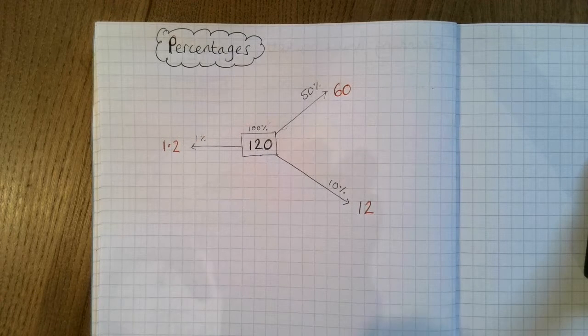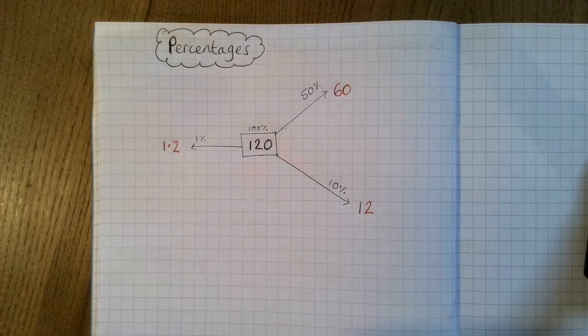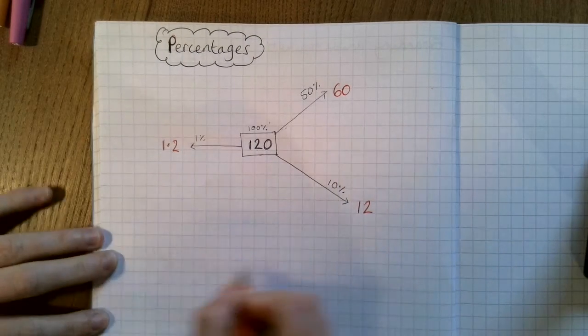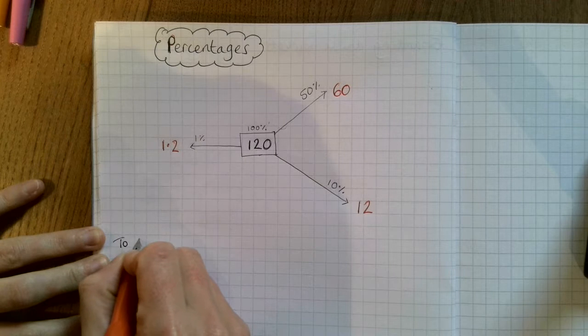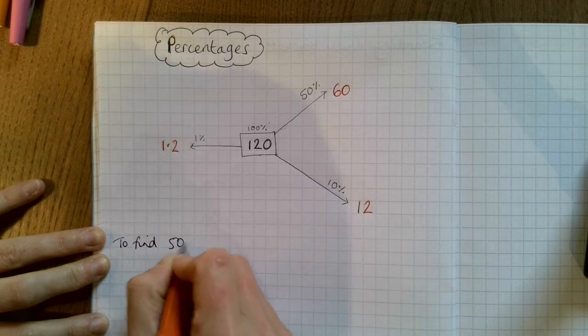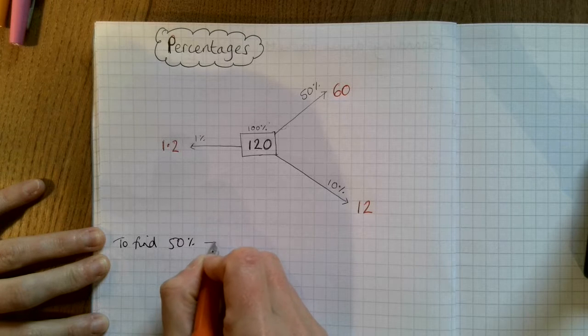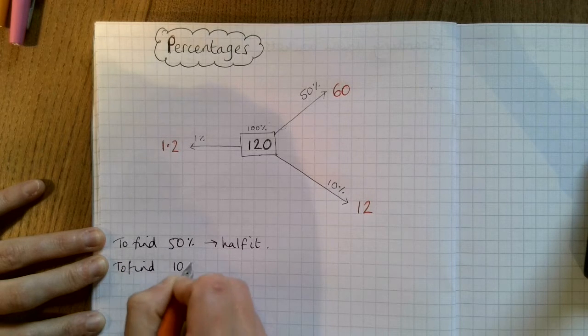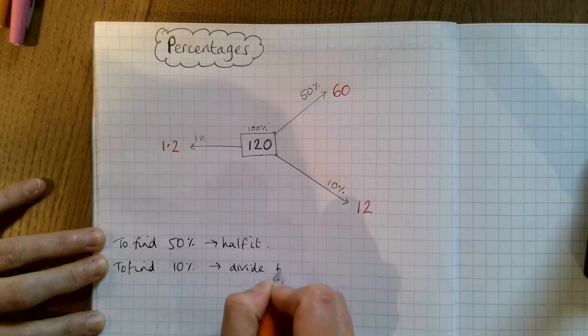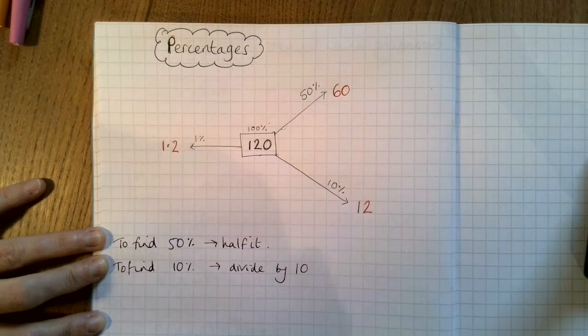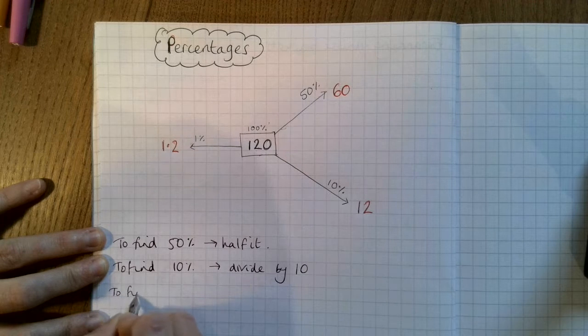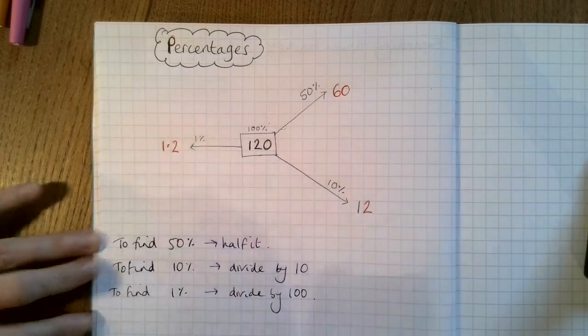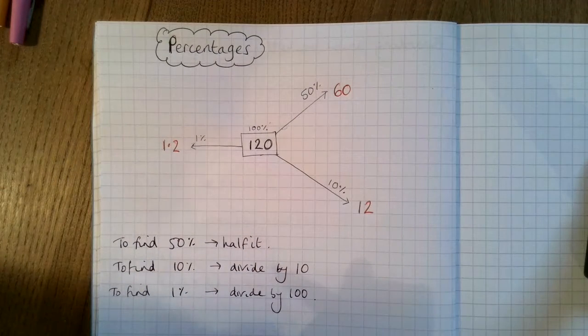So we're going to just write some little hints for ourselves there so we don't forget. This can be our notes section. To find 50% we half it. To find 10% we divide by 10. And to find 1% we divide by 100.